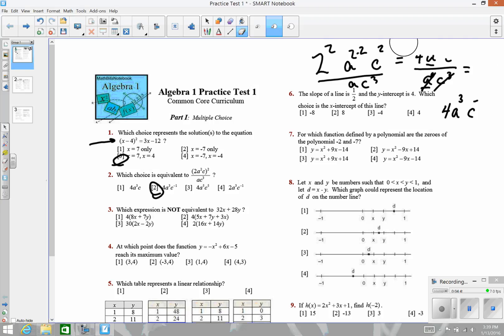Okay, now at number 3, which expression is not equivalent to 32x plus 28y? Looks like all my answers are in factored form. I'm going to follow my rules of factoring for 32x plus 28y. First up, I want to ask myself, is there a GCF, greatest common factor, something that goes into both 32 and 28? 4 does, I don't think anything higher than 4 does.